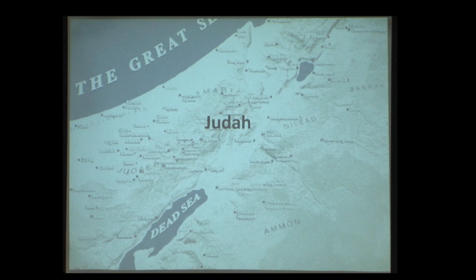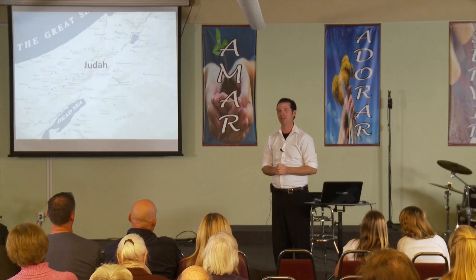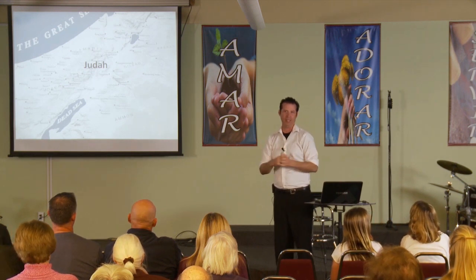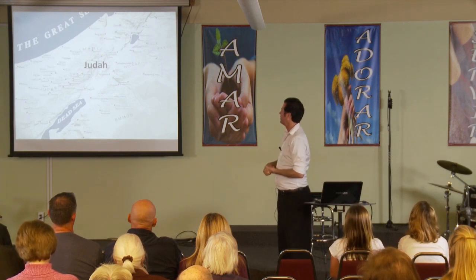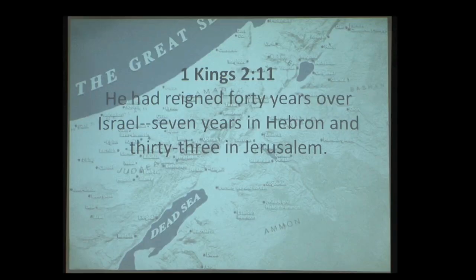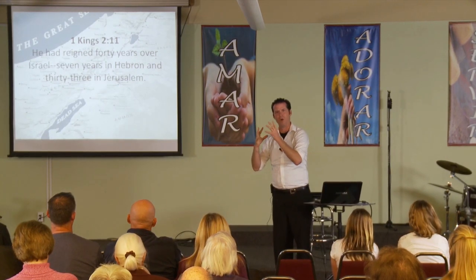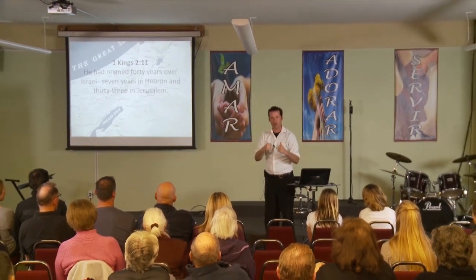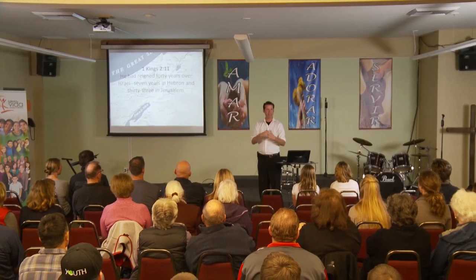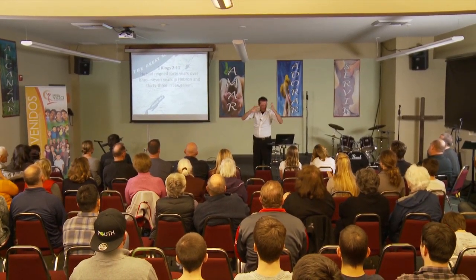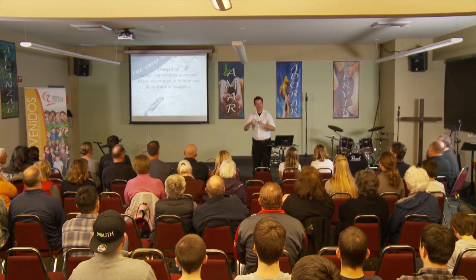We'll start with the land of Judah — the largest allotment, the largest space of territory given to any of the tribes. When Joshua came over, you couldn't just move where you wanted. You had to move where your tribe or clan lived or where it was assigned. Within Judah, 1 Kings 2:11 says David reigned 40 years over Israel. Israel means something like 'one who wrestles with God' or 'man of God.'